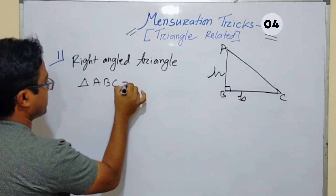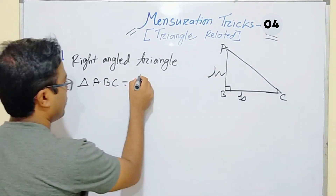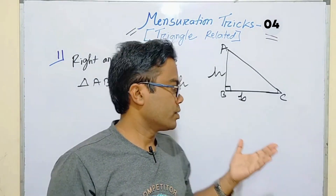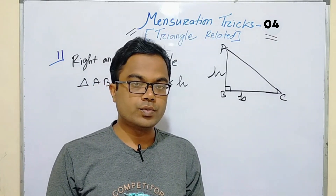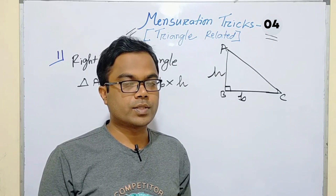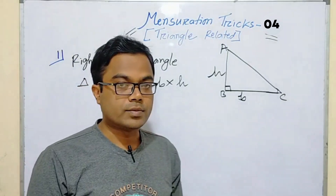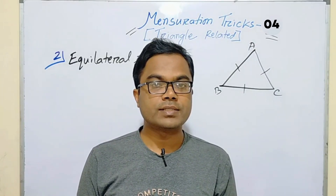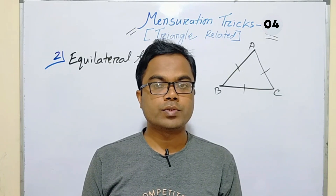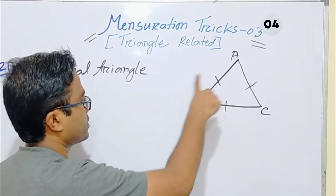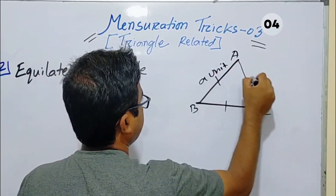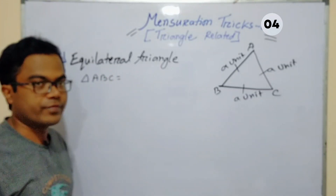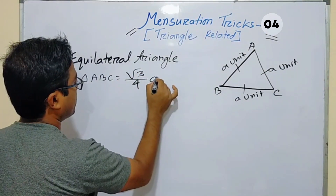You can see this triangle ABC. The area of triangle ABC — no problem — is half of base into height, that is, base times height divided by two. We can consider each side as 'a' units. In that case, the area of triangle ABC equals root 3 by 4 times a squared square units.